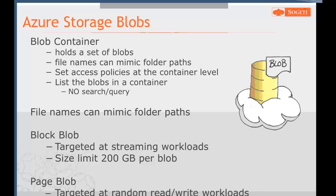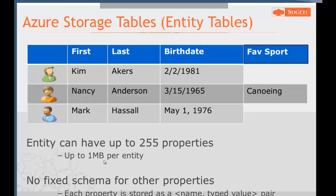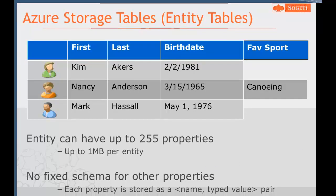Azure storage tables — or entity tables, which is really a better term — allow us to store simple key-value pairs. In our example, we've got a table with first name, last name, and birth date. You might notice something strange: there are three different types of dates. That's because Azure tables don't enforce any type standards. We can also have a fourth column, Favorite Sport, which only applies to one record — it's completely optional. You can still create a very structured, rigid table that adheres to your schema.